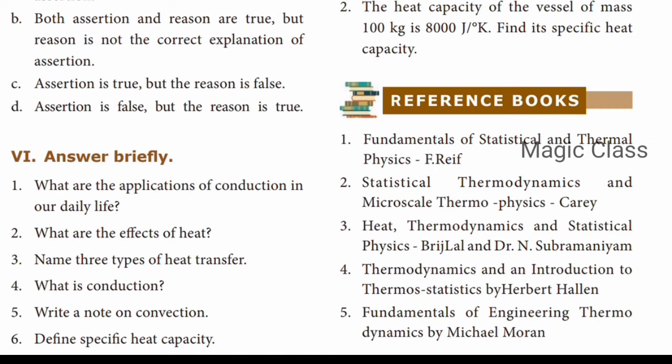Question number five: Write a short note on convection. The answer is on page number 38. Convection is the form of heat transfer from places of high temperature to places of low temperature by the actual movement of molecules. It takes place in liquids and gases. Two important things: it occurs in liquids and gases, and the actual movement of atoms and molecules takes place.